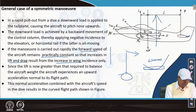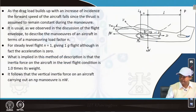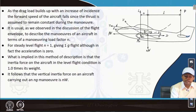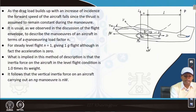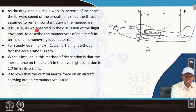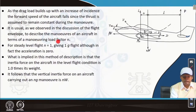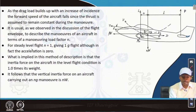As the drag load builds up with an increase of incidence, the forward speed of the aircraft falls, since the thrust is assumed to remain constant during the manoeuvre. It is usual, as observed in the discussion of the flight envelope, to describe the manoeuvres of an aircraft in terms of the manoeuvring load factor N. We find the manoeuvring load factor in terms of which the manoeuvre is generally discussed — how many g's — and depending on that, the design is carried out.